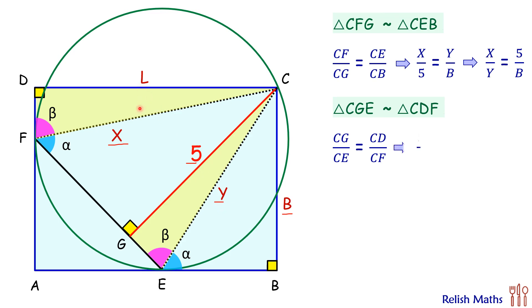So 5 by Y is L upon X. Doing cross multiplication, taking X on the other side and Y on the other side, we get X upon Y is L upon 5.